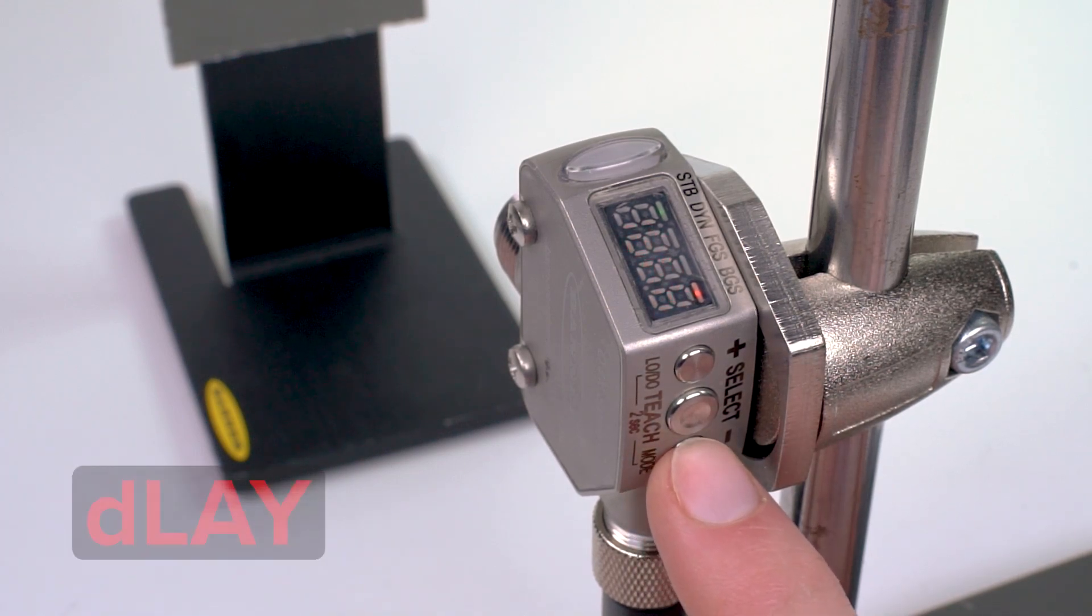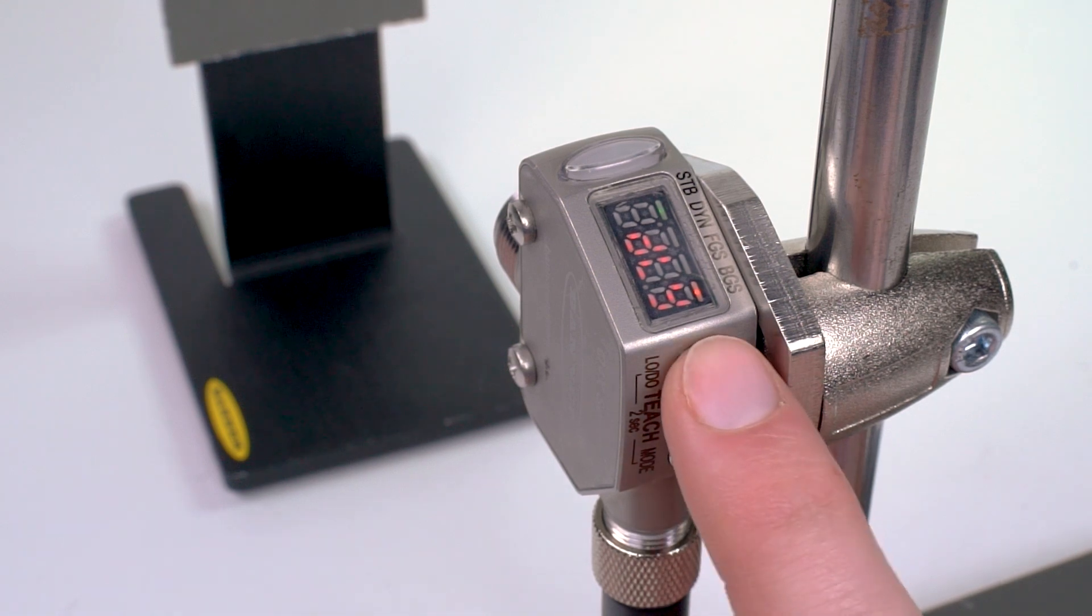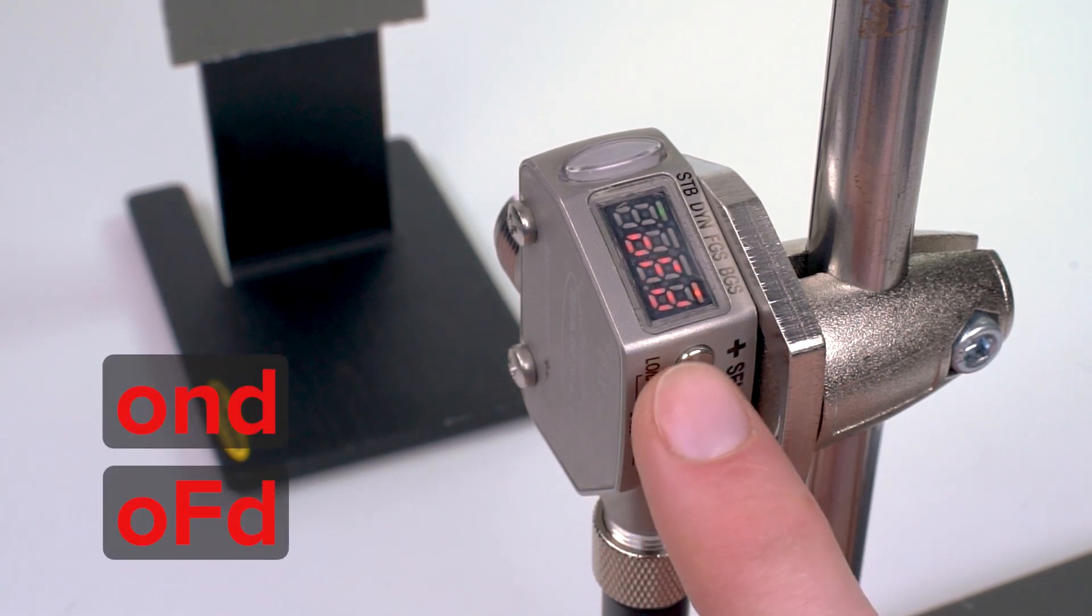Scroll until the display shows DLY and press the select button again. The sensor will return to the main setup mode menu, which will now include two new options: OND and OFD.